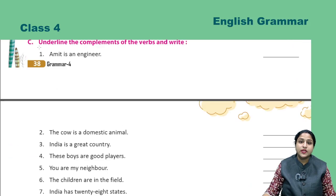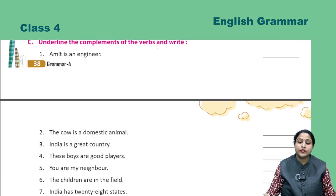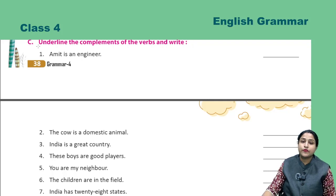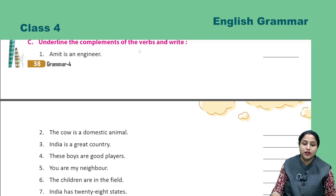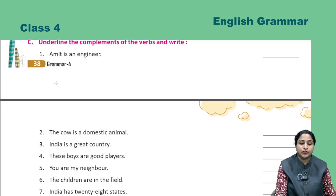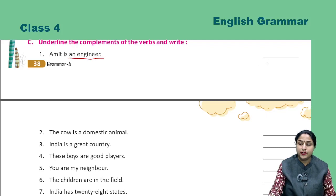Now see Exercise C: underline the complements of the verbs and write them. You need to underline the complement of the verb and write it. First: 'Amit is an engineer.' So 'an engineer' will be the complement.